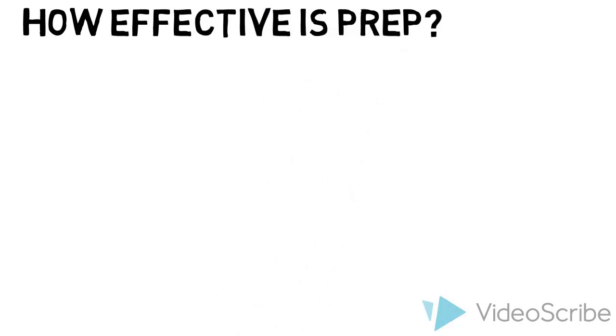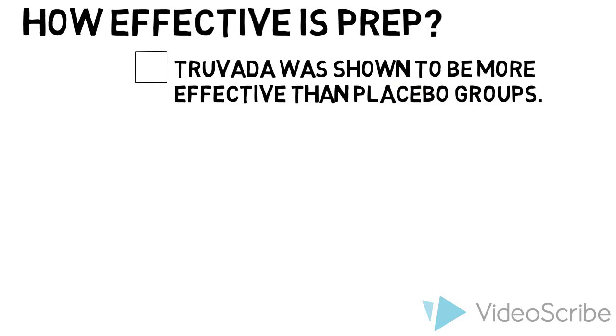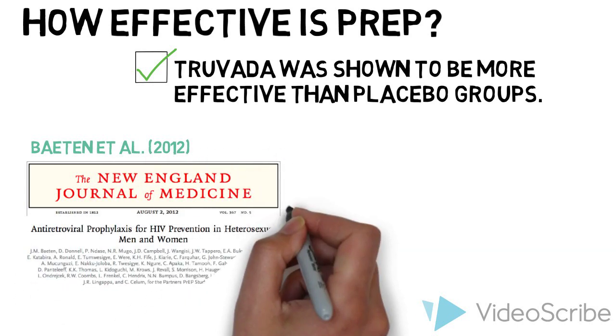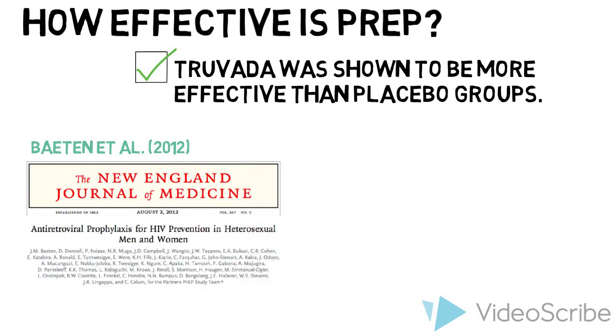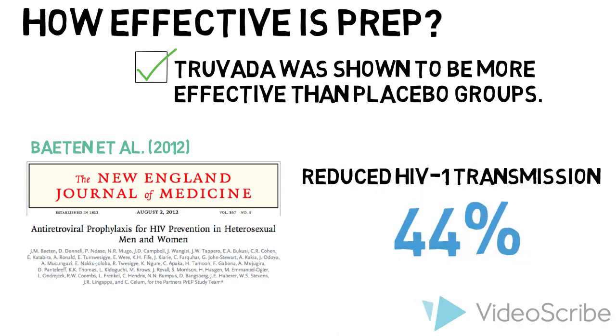The majority of the studies that tested the efficacy of the drug found that it was consistently more effective than the placebo group. Baeten et al. conducted a study examining heterosexual couples and found that PrEP's effectiveness at reducing HIV-1 transmission was 44%, but also established that the effectiveness of the drug was correlated with proper use.